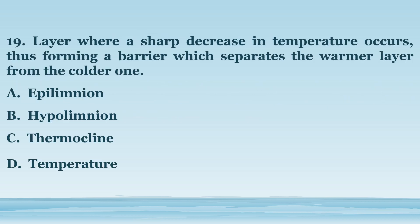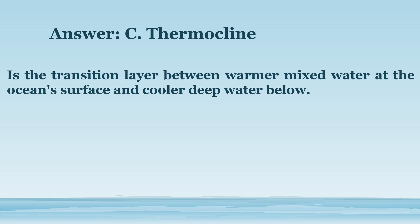Number 19. Layer where a sharp decrease in temperature occurs, thus forming a barrier which separates the warmer layer from the colder one. A. Epilimnion. B. Hypolimnion. C. Thermocline. D. Temperature. The answer is letter C. Thermocline. Is the transition layer between warmer mixed water at the ocean's surface and cooler deep water below.